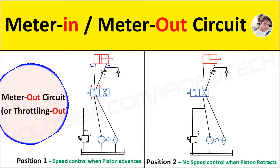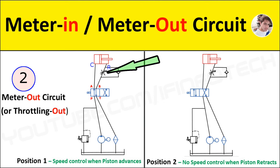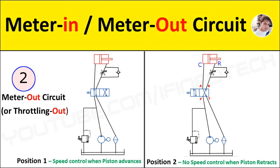Next is the meter-out circuit for a double acting cylinder. In a meter-out circuit, the rate of flow of oil coming out of the cylinder is controlled by a flow control valve. The flow control valve is placed at the outlet of the cylinder. The rod-end port R is the outlet for extension, and the cap-end port C is the outlet for retraction. In the first position of the 4/2 direction control valve, oil under pressure flows from port P to port A and port B to port T. This flow is through the flow control valve, and the flow is controlled, hence the piston extends slowly.